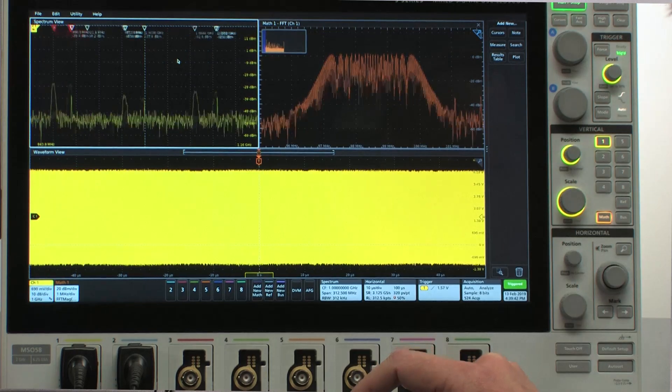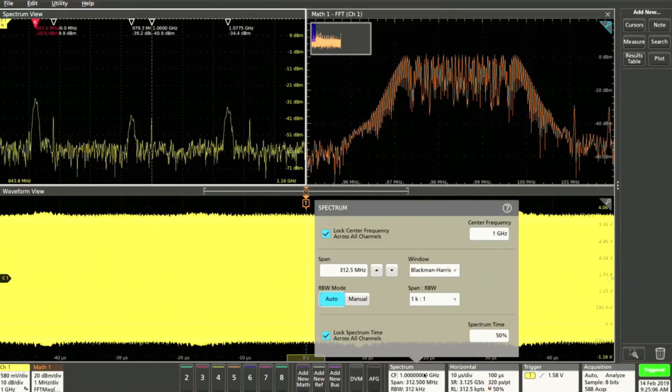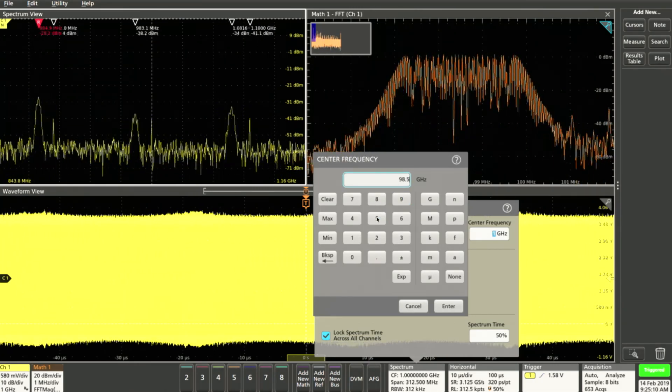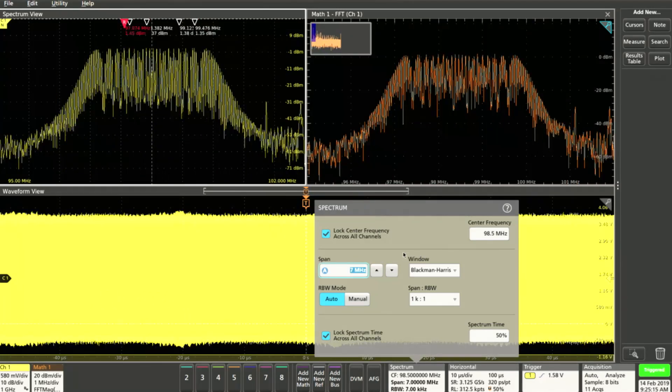Next, I get a spectrum badge down here that indicates my center frequency, span, and resolution bandwidth of the Spectrum View display. So I'm going to double tap that, set my center frequency to ninety-eight point five megahertz, and set my span to seven megahertz.